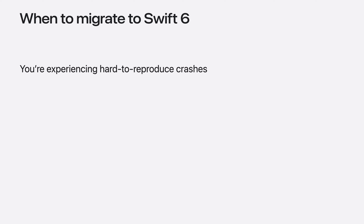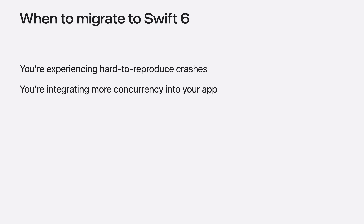This brings us to the benefits of Swift 6. The Swift 6 language mode introduces full enforcement of data isolation. The compiler will prevent accidental sharing of state between tasks and actors, allowing you to carry out refactoring or add new functionality to your app without worrying you're introducing new concurrency bugs. The Swift 6 language mode is opt-in for both existing and new projects. Adopting it can significantly improve the quality of your app by catching mistakes in concurrent code at compile time.